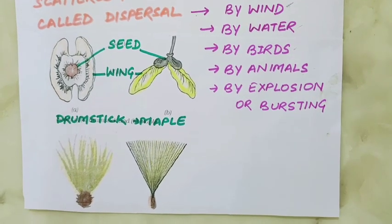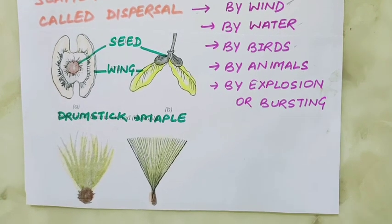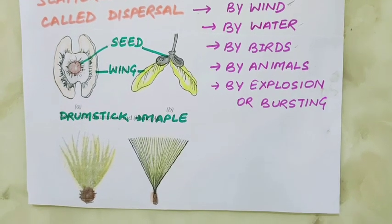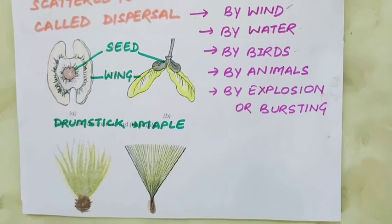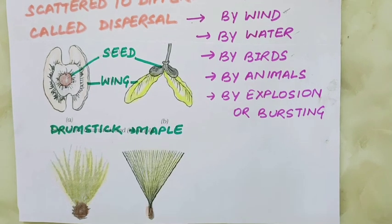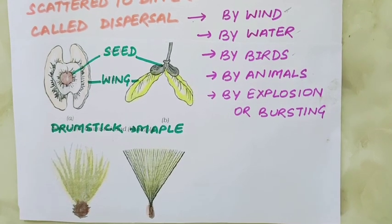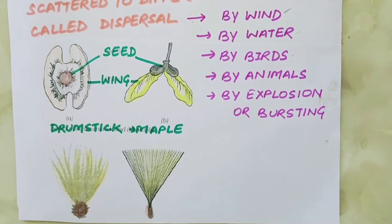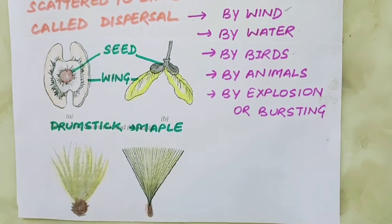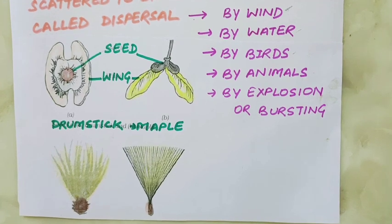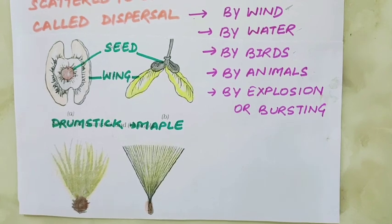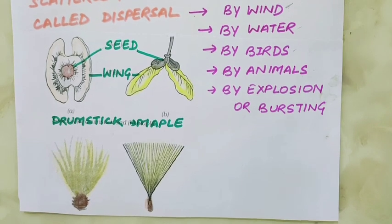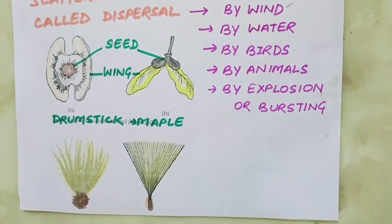A seed contains a plant embryo in a resting state, which begins to grow only under favorable conditions. The process by which a seed begins to grow is called seed germination. When the plant starts maturing, it bears flowers which again produce seeds and fruits, and this cycle continues to produce more offspring for the preservation of the species. This is all about asexual and sexual reproduction in plants. Hope you enjoyed the chapter. Thanks a lot.